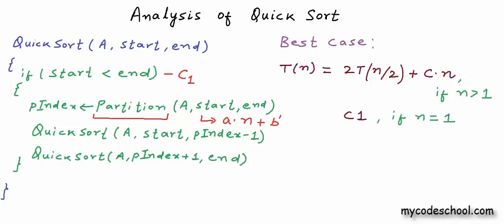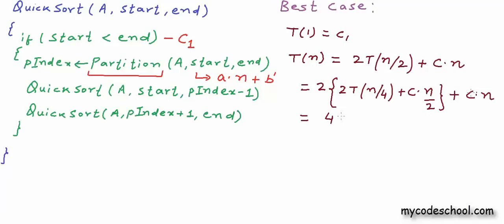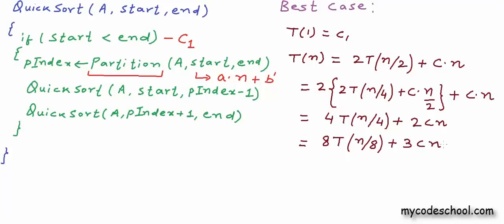This recurrence relation is the same one we had for merge sort. We can solve it by expanding: T(n) = 2·T(n/2) + c·n. Writing T(n/2) as 2·T(n/4) + c·(n/2) gives 4·T(n/4) + 2cn. Continuing, we get 8·T(n/8) + 3cn. In general, after k reductions: T(n) = 2^k · T(n/2^k) + k·c·n.